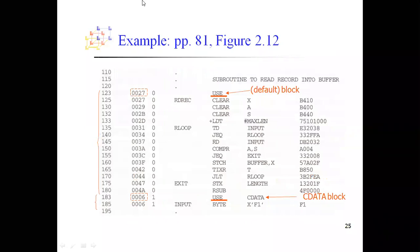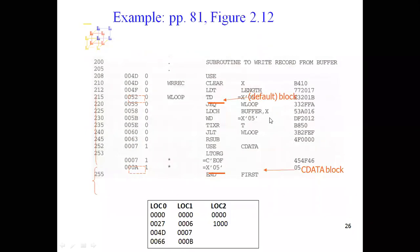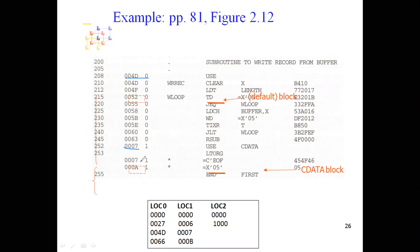This is a continuation of the program. In the previous slide, the default block, CDATA block, and CBLKS block each started at 0000. Now the second default block starts at 0x0027, the second CDATA block starts at 0x0006. Then the third default block starts at address 0x004D, and the third CDATA block starts at address 0x0007. So in this program we have three default blocks, three CDATA blocks, and one CBLKS block.